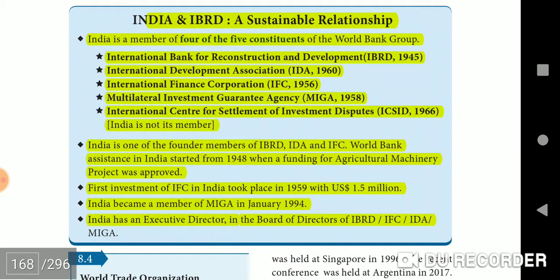India and IBRD — a sustainable relationship. India is a member of all five constituents of the World Bank Group: IBRD (1945), International Development Association IDA (1960), International Finance Corporation IFC (1956), Multilateral Investment Guarantee Agency MIGA (1958), and International Centre for Settlement of Investment Disputes ICSID (1966) — though India is not a member of ICSID. World Bank assistance to India started from 1948 when funding for an agricultural machinery project was approved. The first IFC investment in India was in 1959 with US $1.5 million. India became a member of MIGA in January 1994.